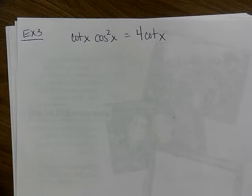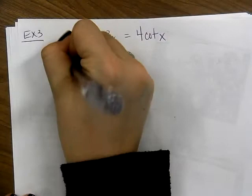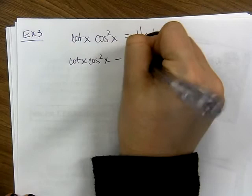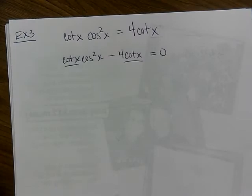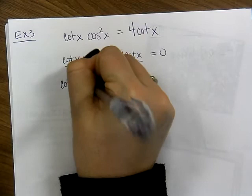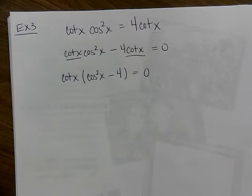Getting more complicated now. General rules: if these were regular variables, what would you do? Move everything to one side, set it equal to 0, and factor. So we get cot(x)·cos²(x) − 4·cot(x) = 0. Do you see the common factor of cot(x)? Factor that out: cot(x) · (cos²(x) − 4) = 0.